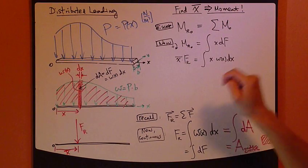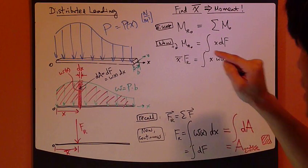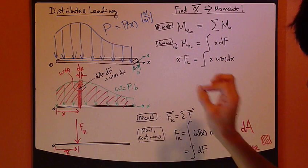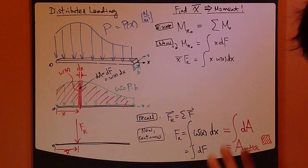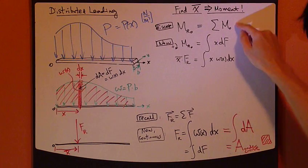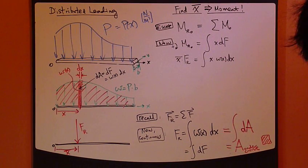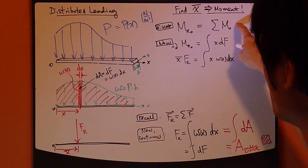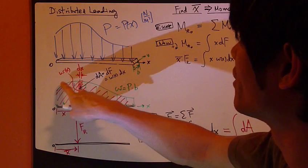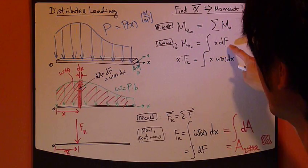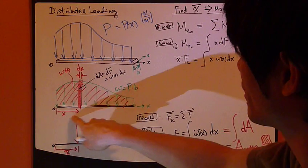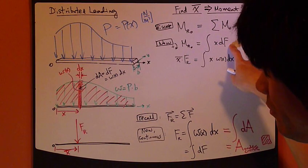So left-hand side, same. Now, right-hand side is the integral. The integral of force times length, because moment is R cross F, so length times force, or force times length. So this moment created by this distributive force is, we need to integrate this X by dF.